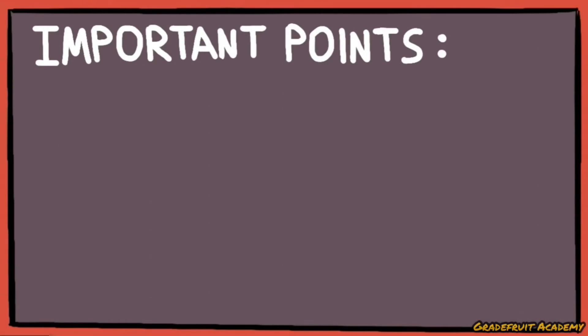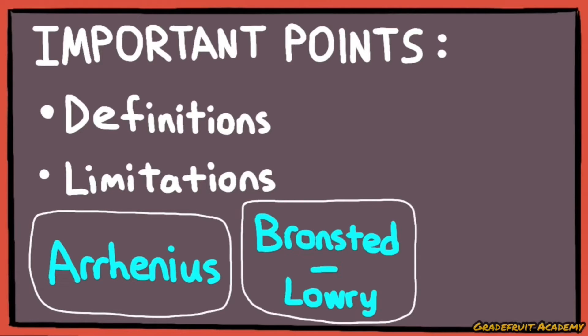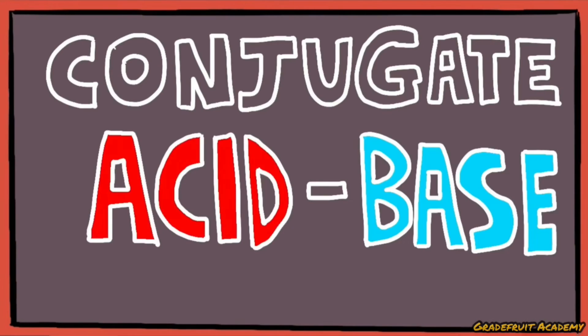So the important points to take note of are knowing the definitions and limitations of each of the three definitions of acids and bases. With that, let's now dive into understanding conjugate-acid-base pairs.